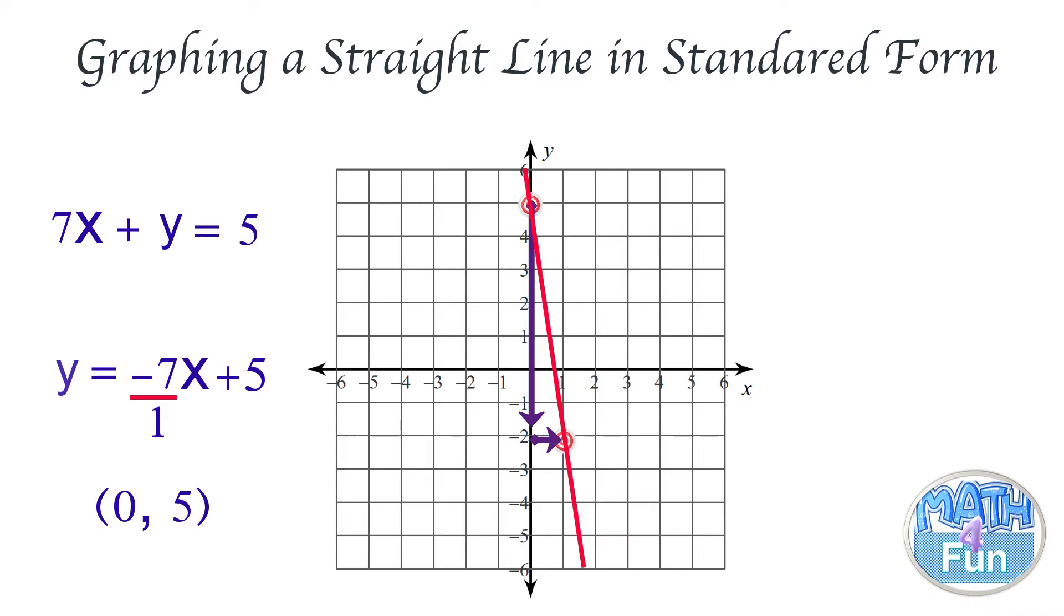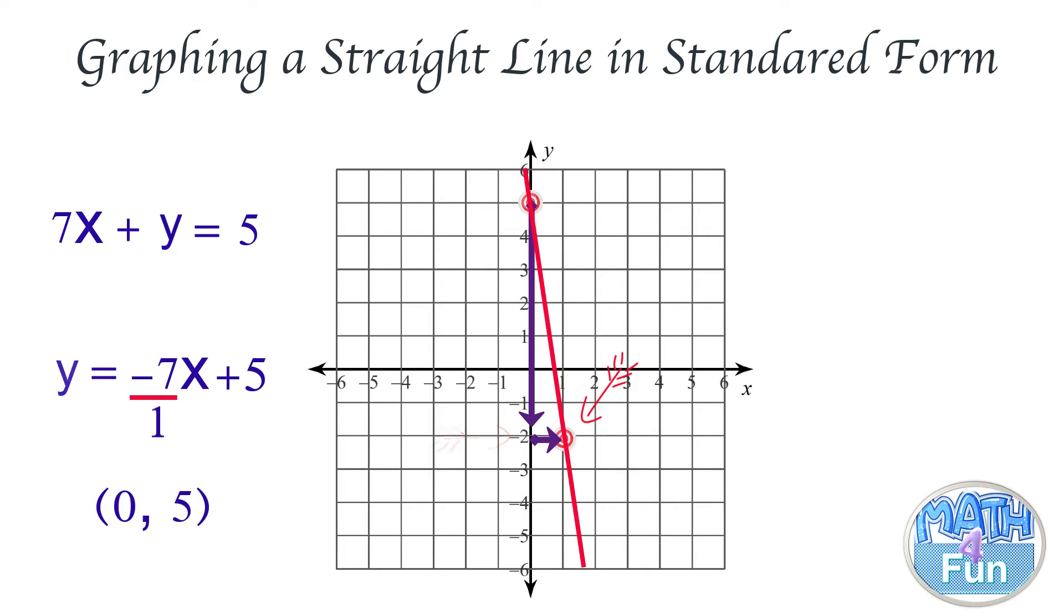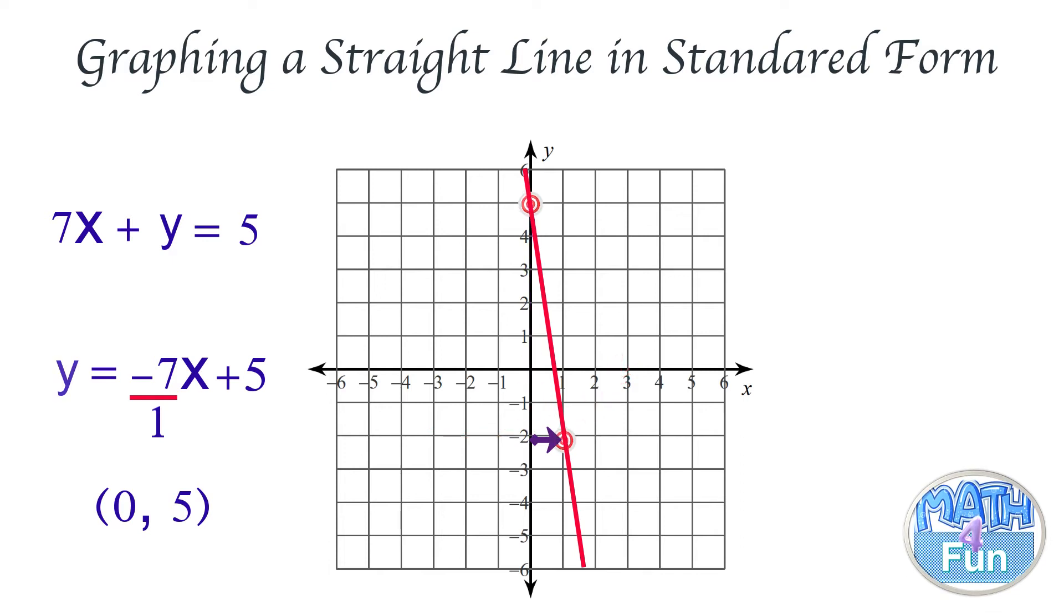So go down 7 units: 1, 2, 3, 4, 5, 6, 7, and go right one unit. Then join the points and you'll have the straight line drawn.